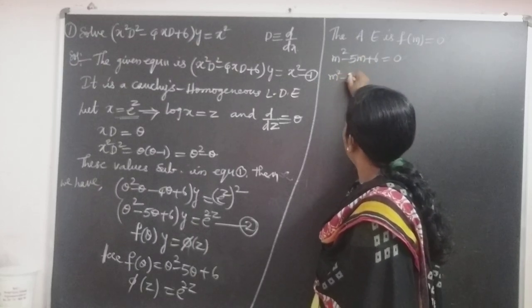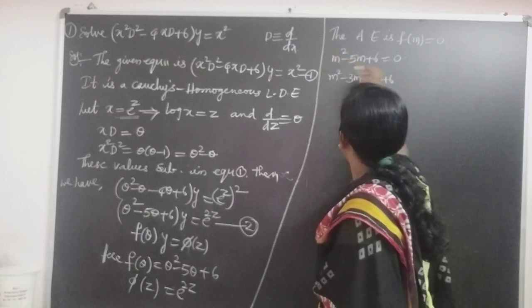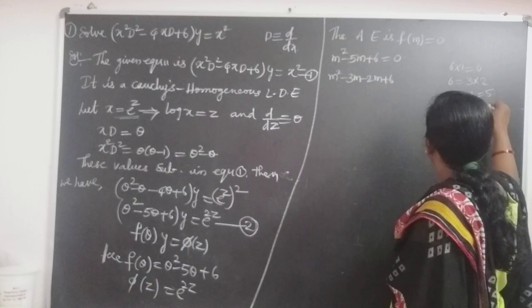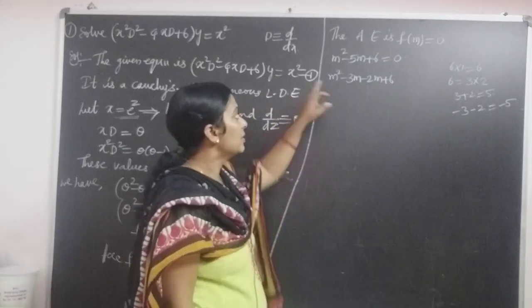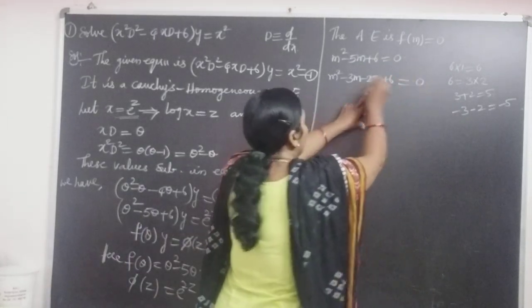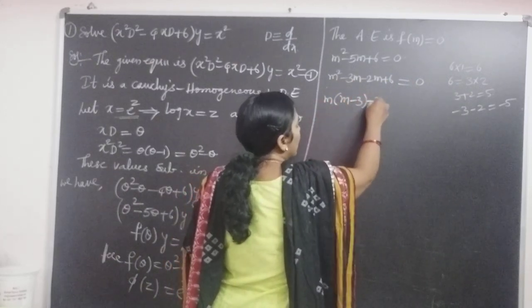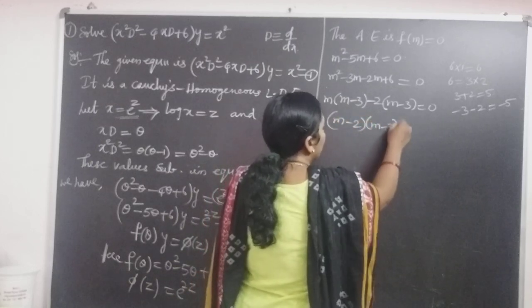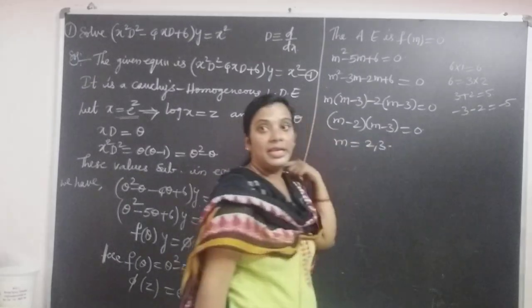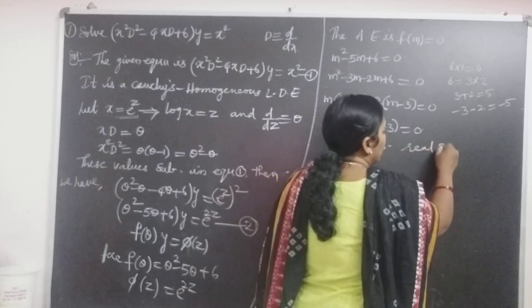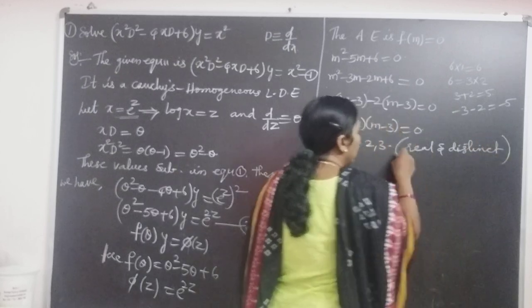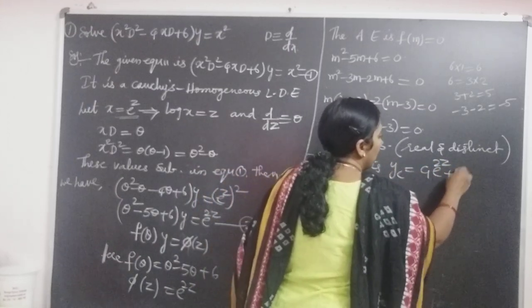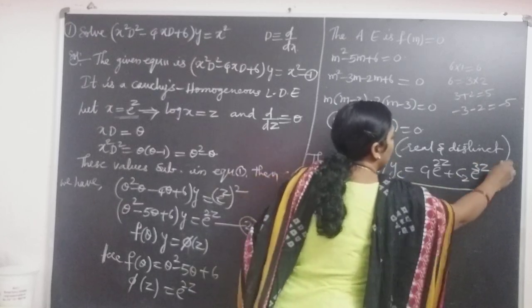Factoring m squared minus 5m plus 6: we split as m squared minus 3m minus 2m plus 6 equals 0, because 3 times 2 equals 6 and 3 plus 2 equals 5, so minus 3 minus 2 equals minus 5. Taking m common from the first two terms gives m(m minus 3), and minus 2 common from the last two terms gives minus 2(m minus 3), so (m minus 2)(m minus 3) equal to 0. The roots are m equals 2 and m equals 3 — real and distinct. Therefore the complementary function is yc equal to c1 e power 2z plus c2 e power 3z.